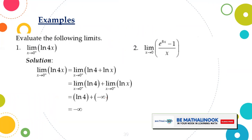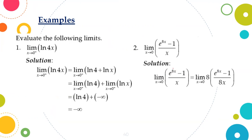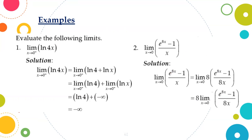Evaluate: limit of (e^(8x) - 1)/x as x approaches 0. Since we have a constant 8 in the exponent, we multiply and divide by 8 to get the limit of 8 times (e^(8x) - 1)/(8x) as x approaches 0. This can be written as 8 times the limit of (e^(8x) - 1)/(8x) as x approaches 0. Applying the theorem, that limit equals 1. Hence, 8 times 1 equals 8.